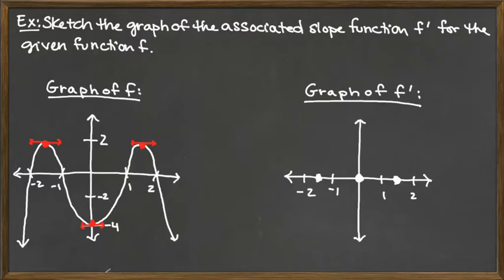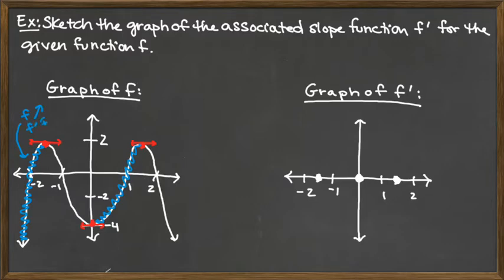Now let's take a look at what's happening in between these values. First, let's look at whenever our function is going up. Our function is going up to the left of that place between negative 1 and negative 2, as well as between 0 and that particular place between 1 and 2. Those are the two intervals where the function is going up, and this tells us that f prime is positive on those intervals – meaning the graph of f prime will be above the x-axis.